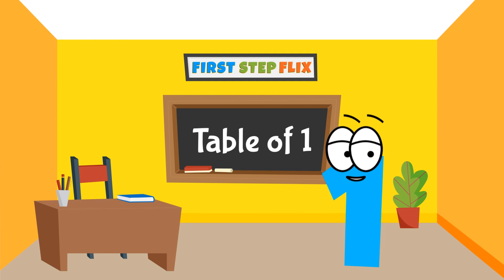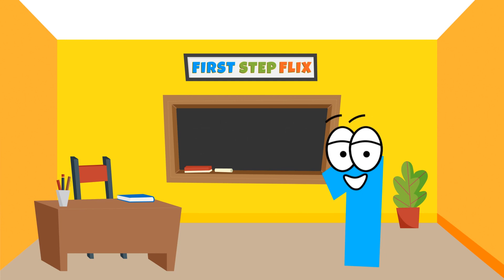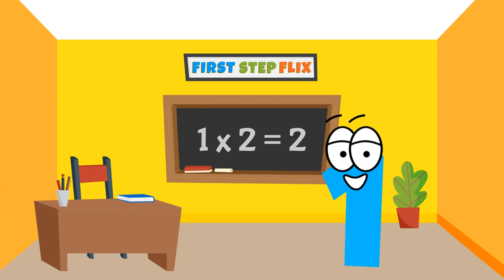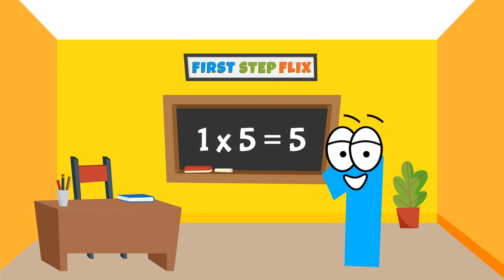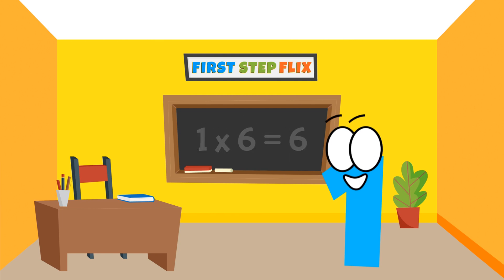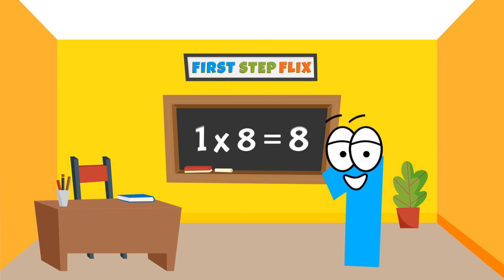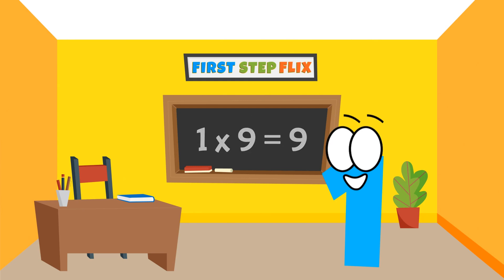Table of 1. 1 one is 1, 1 two is 2, 1 three is 3, 1 four is 4, 1 five is 5, 1 six is 6, 1 seven is 7, 1 eight is 8, 1 nine is 9, 1 ten is 10.